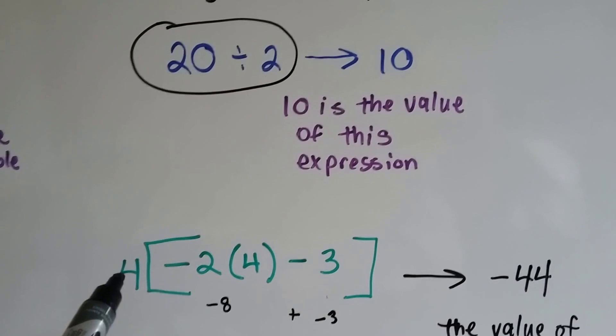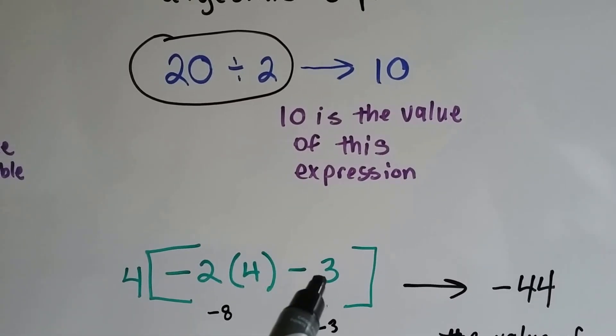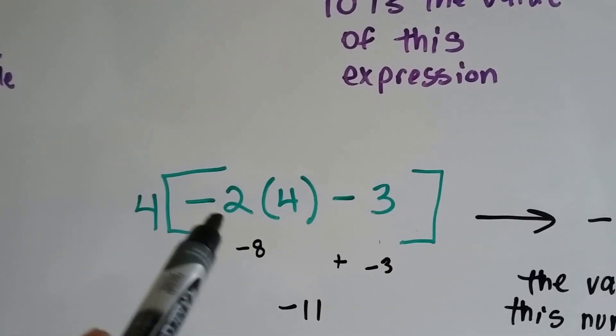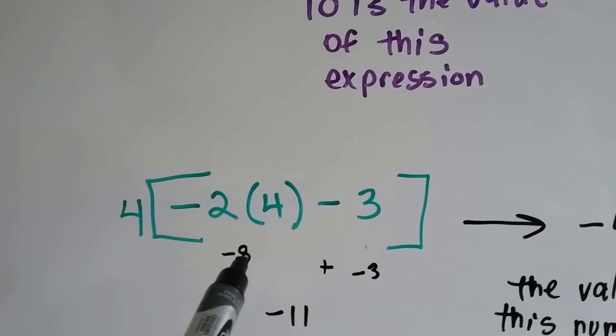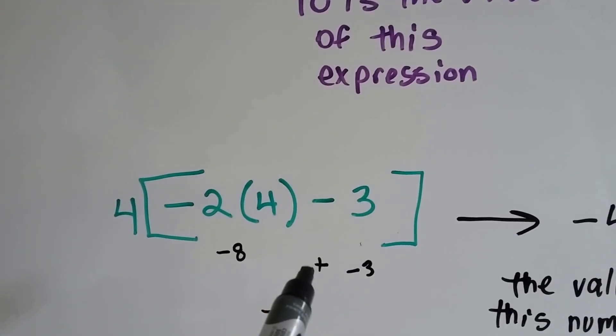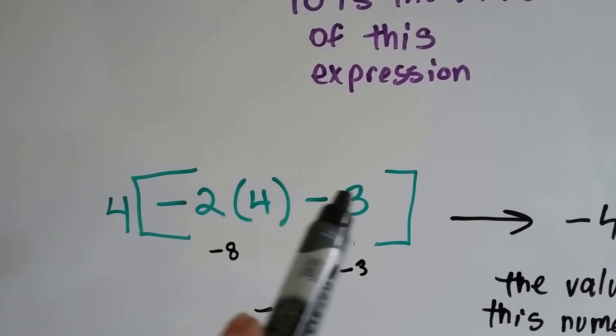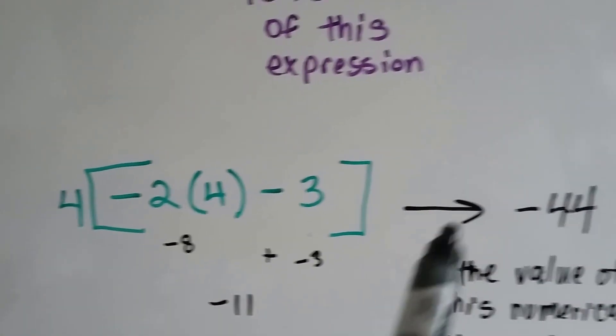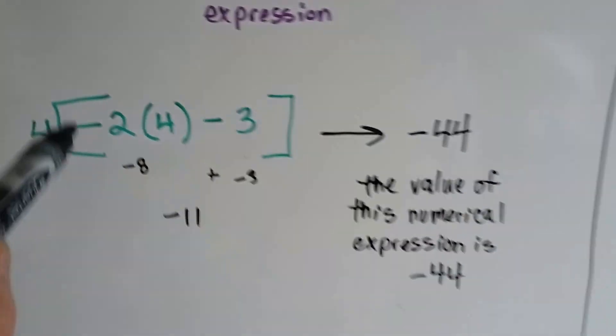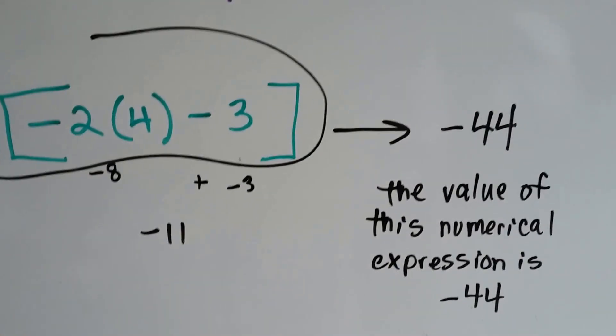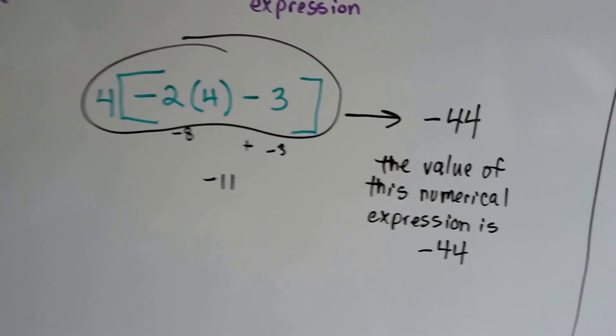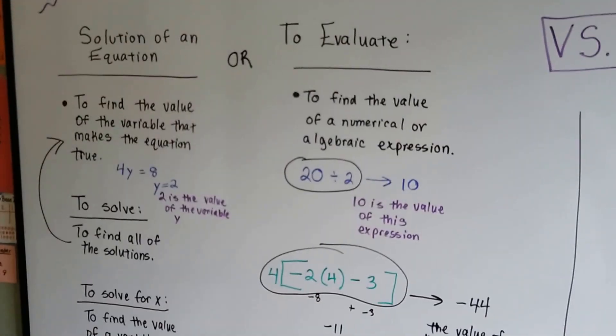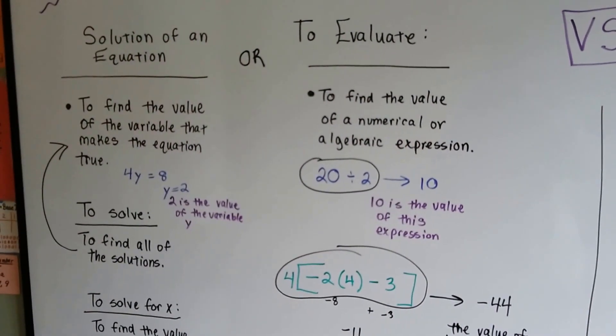If we had 4 minus 2 times 4 minus 3, to find the value of it, we just do order of operations. Negative 2 times 4 is negative 8. If we're going to subtract 3, we're going to add the opposite. So we're going to add a negative 3. Negative 8 plus negative 3 is negative 11 times 4 is negative 44. So the value of this numerical expression is negative 44. It's the same thing as saying the value of 2 plus 3 is 5. See? So it's finding the solution.